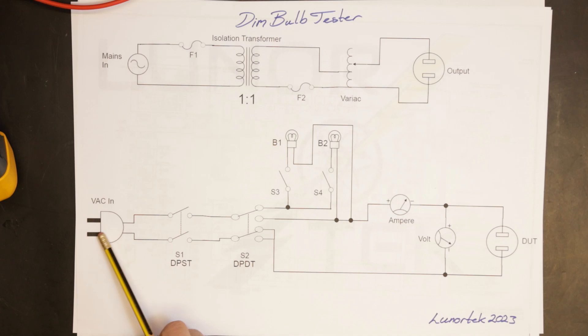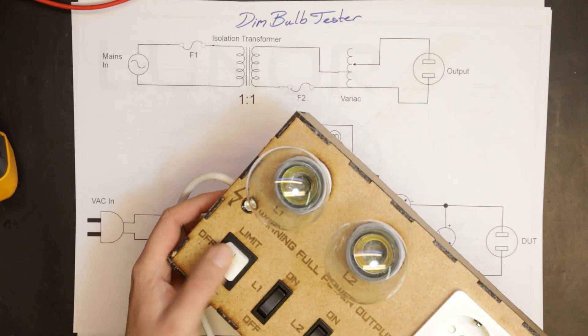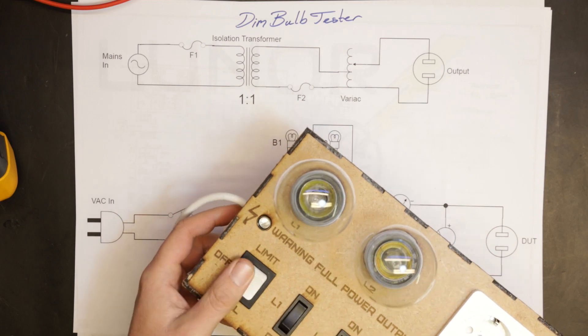where I have my power into the dim bulb tester with a double-pole single-throw switch. So this is my original plan for switches, but I had this three-way switch laying around so I used this one because